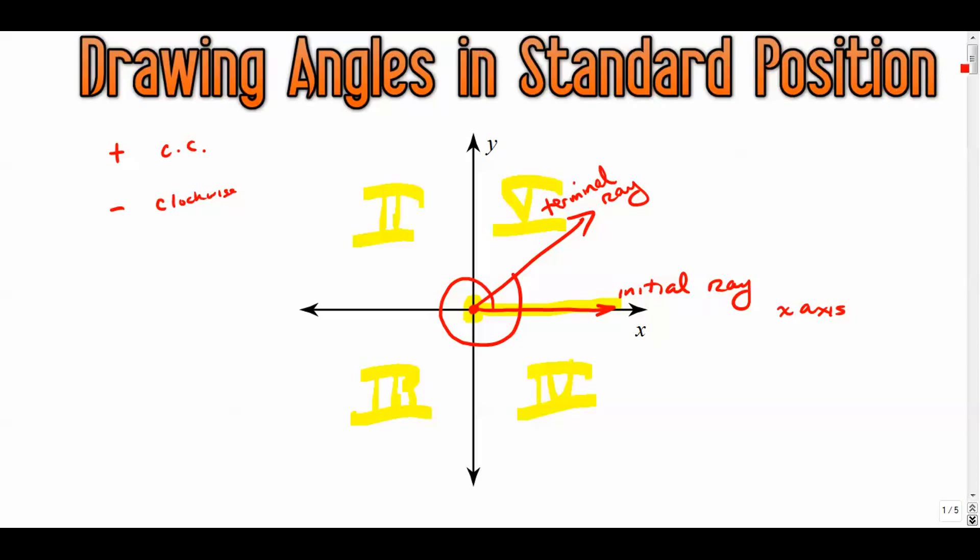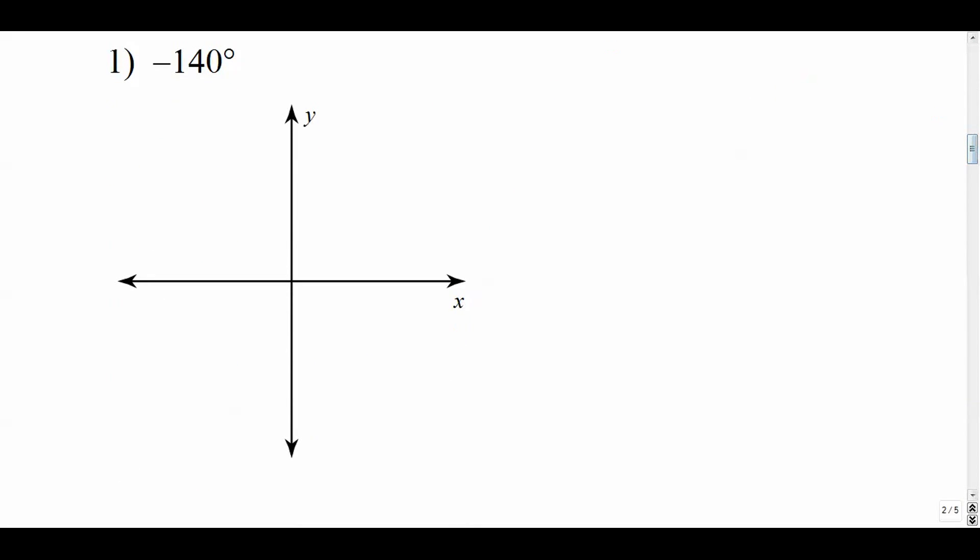Let's try a couple of these. Negative 140. It's a negative degree so we're definitely going to go clockwise. Let's start with our vertex at the origin, our initial ray on the positive x-axis. We're going to go down 140 negative degrees, go this way clockwise. This would be negative 90, this would be negative 180. Well negative 140 is going to be somewhere in here, so negative 140 degrees is right there.